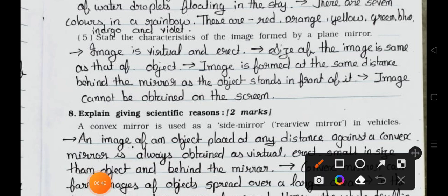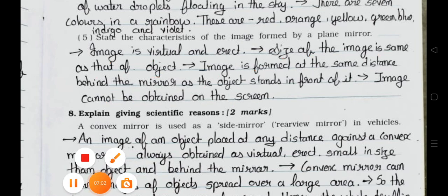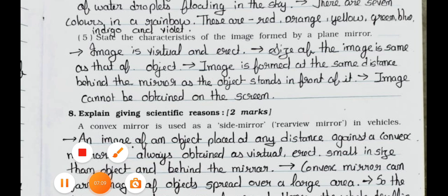Question 5: State the characteristics of the image formed by a plane mirror. Answer: The image is virtual and erect. The size of the image is the same as that of the object. The image is formed at the same distance behind the mirror as the object stands in front of it. The image cannot be obtained on a screen. We will see main 8 in the next video — part 3. Stay safe and stay healthy. Bye.